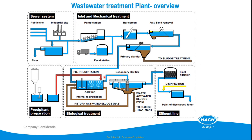After that we go through secondary treatment. The secondary treatment involves biological processes to treat organic compounds and inorganic compounds, some nitrogen like ammonia, nitrite, nitrate, and we can also remove a part of phosphates here. After the biological tank there will be another secondary clarifier to remove the last part of TSS and also the organic compound.